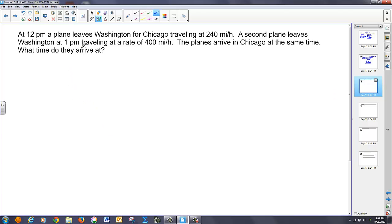It says at 12, a plane leaves Washington for Chicago, traveling at 240 miles an hour. And then a second plane leaves Washington at 1, traveling 400 miles per hour. And the planes end up in Chicago at the same time. We want to know what time they arrive. So, in this case, this guy leaves at 12 p.m. And this guy leaves at 1 p.m. The first guy travels 240 miles per hour. And the second guy travels at 400 miles per hour.